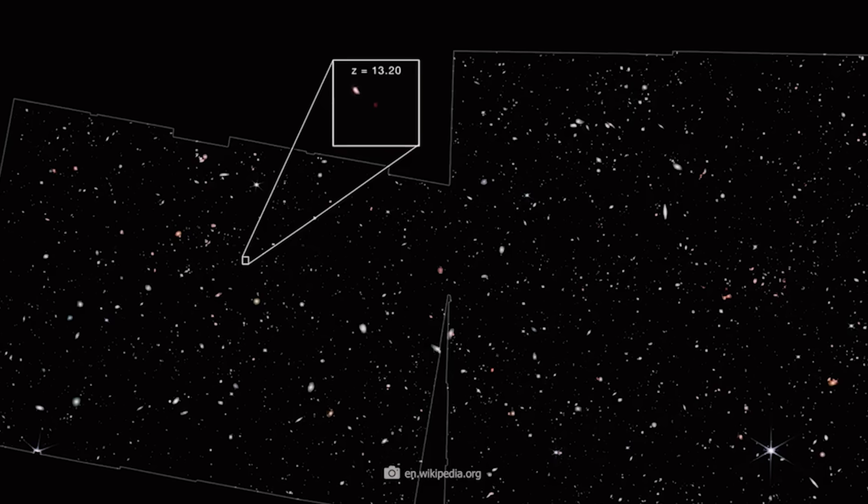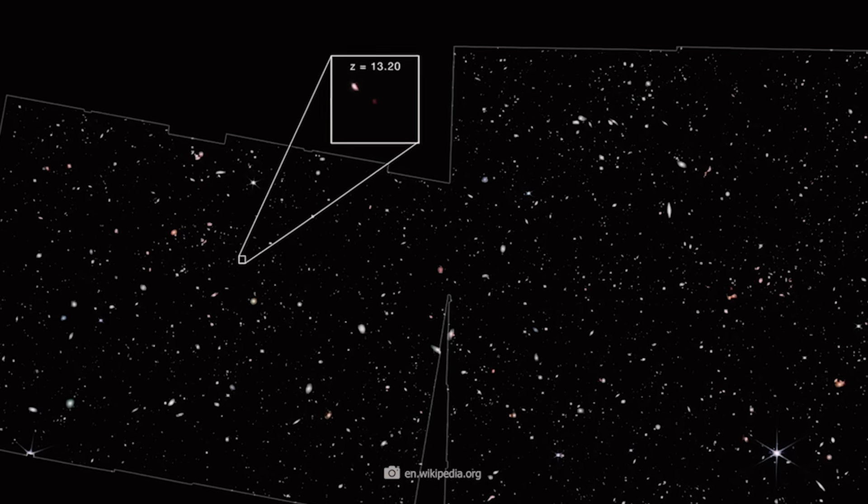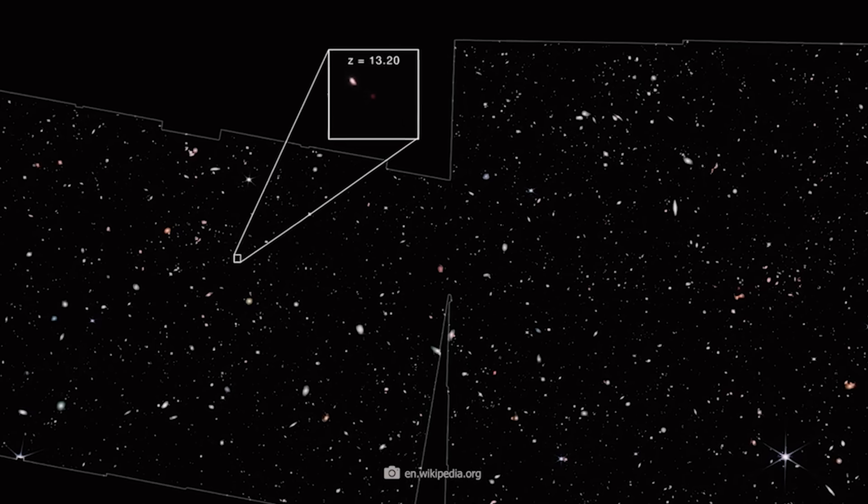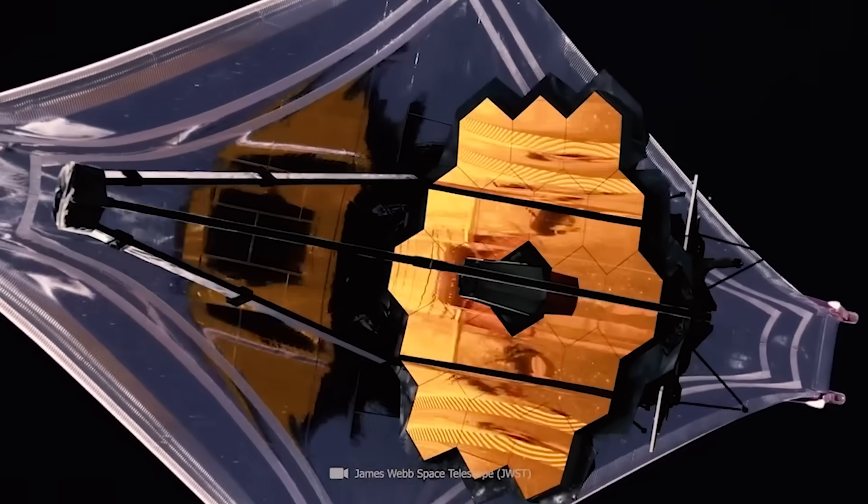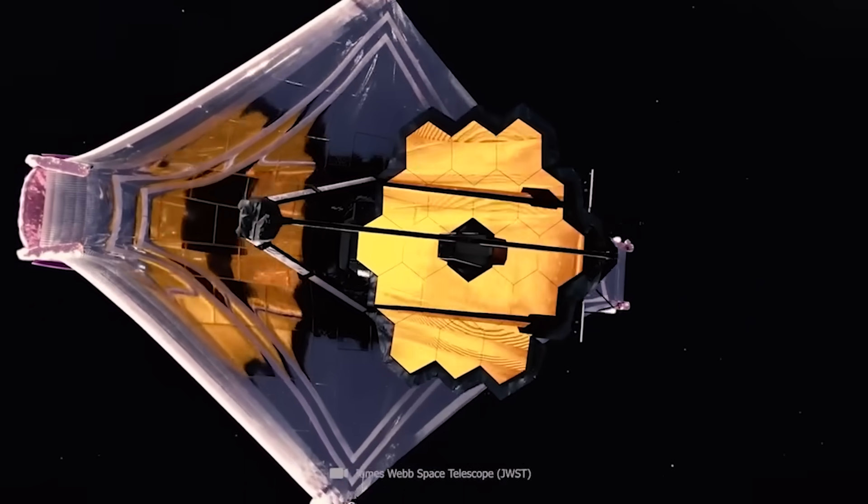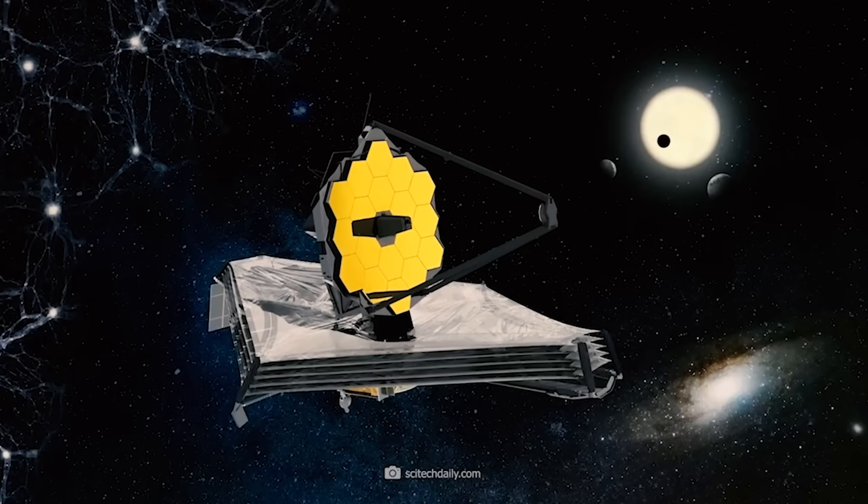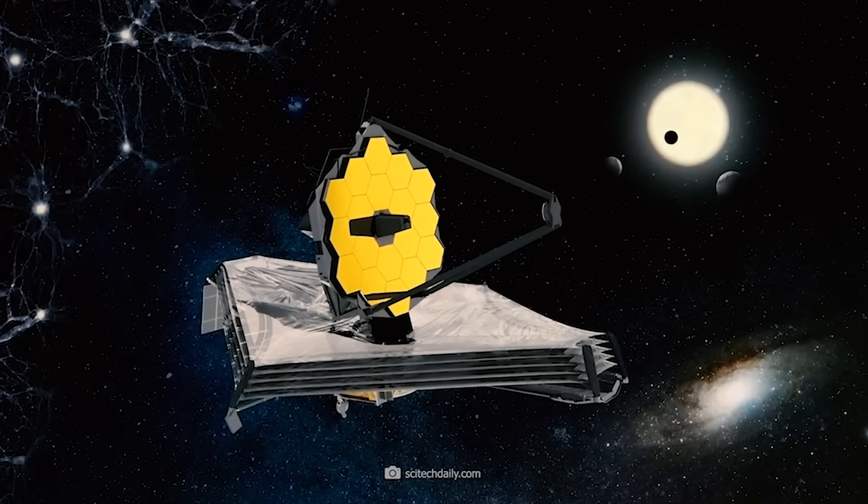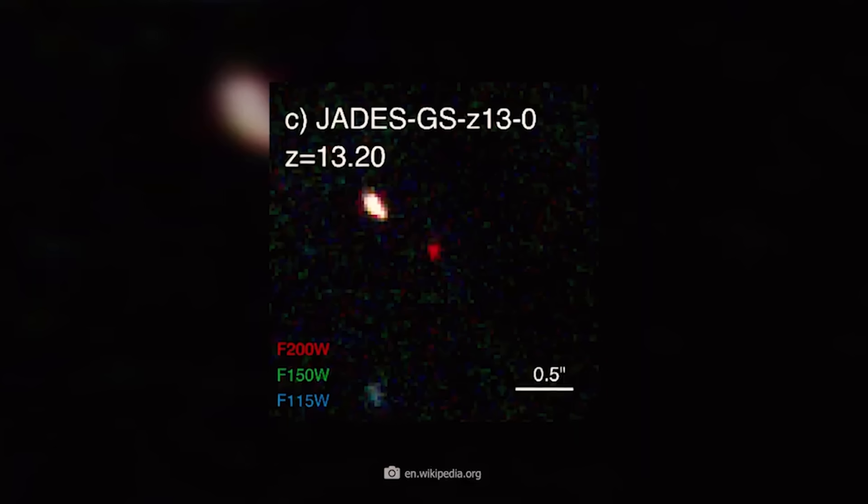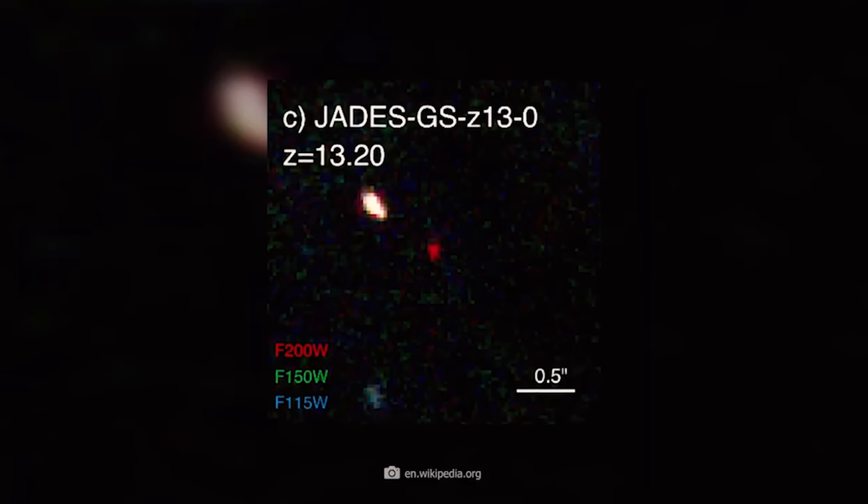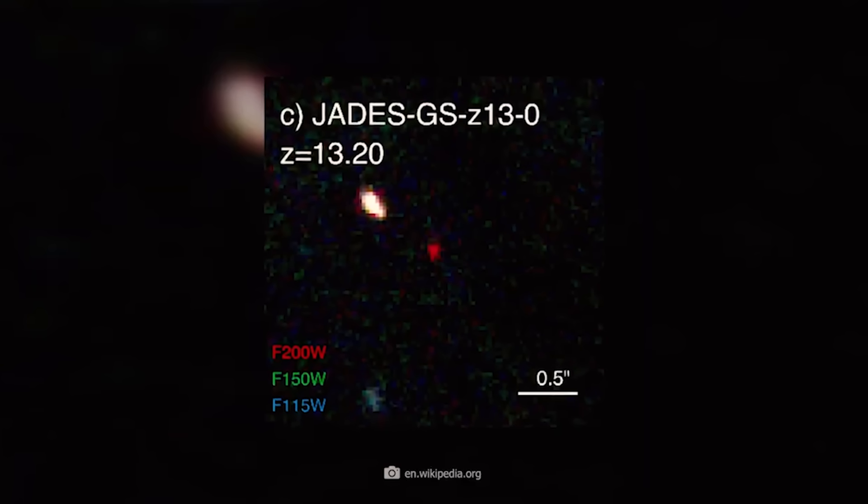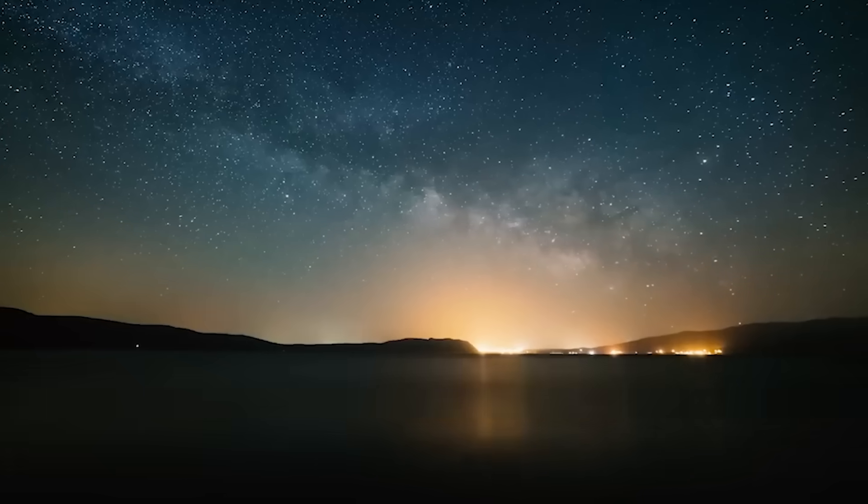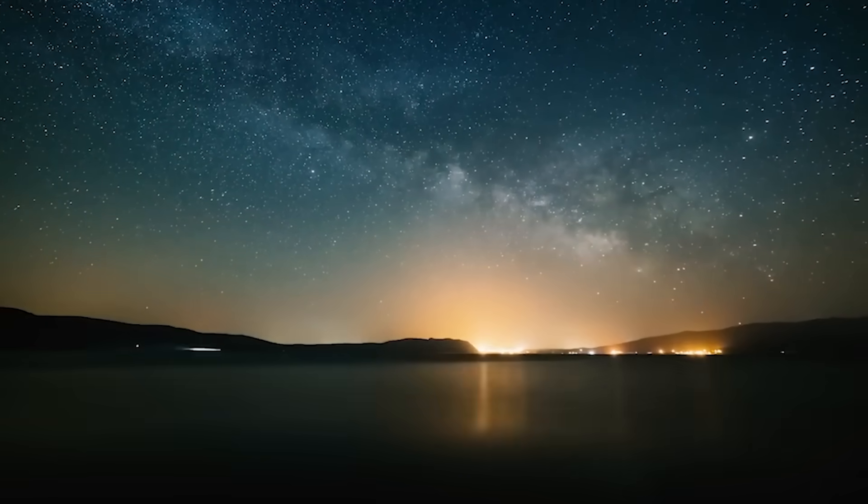JADES GSZ 11 is a high-redshift Lyman Brake galaxy that was discovered by the James Webb Space Telescope on September 29, 2022. This discovery was made as part of the JWST Advanced Deep Extragalactic Survey, or JADES Mission for short. JADES GSZ 11 has, as the name suggests, a redshift value of 13, which means that the galaxy existed around 13.4 billion years ago, and therefore only around 400 million years after the Big Bang.